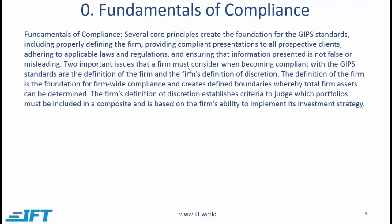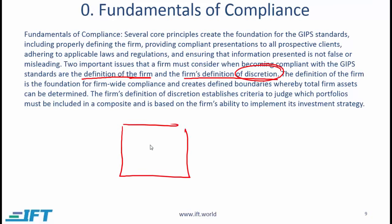Two important issues that a firm must consider when becoming compliant with the GIPS standards are the definition of the firm and the firm's definition of discretion. The definition of the firm is the foundation for firm-wide compliance and creates defined boundaries whereby total firm assets can be determined. The firm's definition of discretion establishes criteria to judge which portfolios must be included in a composite, and is based on the firm's ability to implement its investment strategy. Since only discretionary portfolios should be included in a composite, we clearly need a precise definition of 'discretionary.'